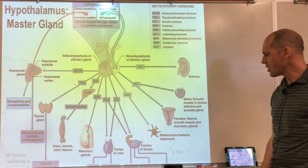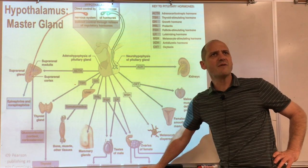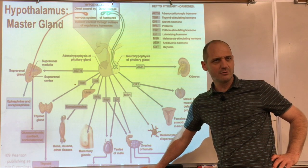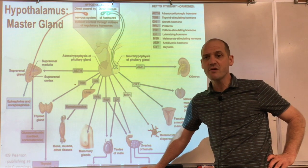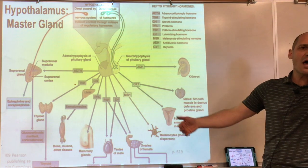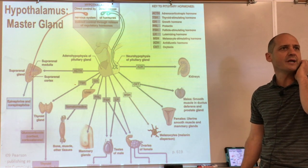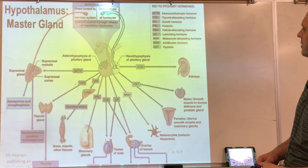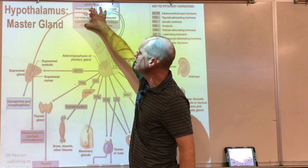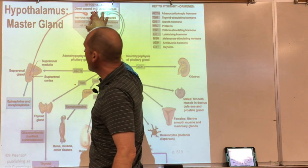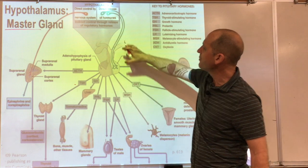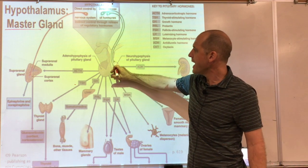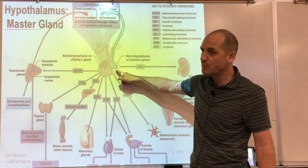Dean Ornish, a cardiologist, has had his preventative heart disease program approved by Medicare — approving something other than pills. He started in 1975 and incorporates mindfulness, mental health, and psychology into treatment. The hypothalamus is called the 'master' gland, controlling the pituitary, which has an anterior (front) and posterior (back) portion — the adenohypophysis and neurohypophysis.